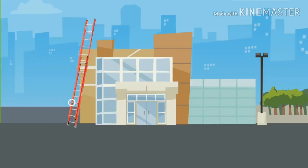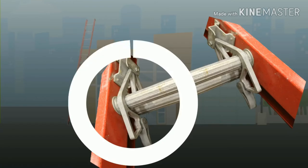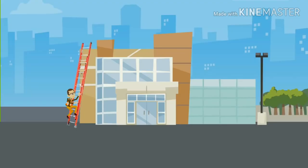There are two rung locks attached to the fly section that keep the fly portion in place. They fit over the top of a rung of the fly section. These locks function as brackets and prevent the fly from sliding down once it supports the climber's weight.